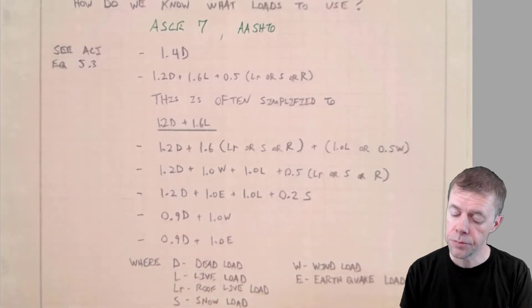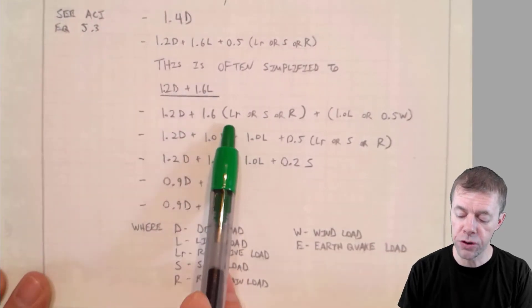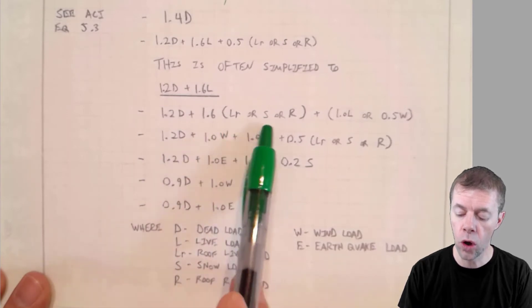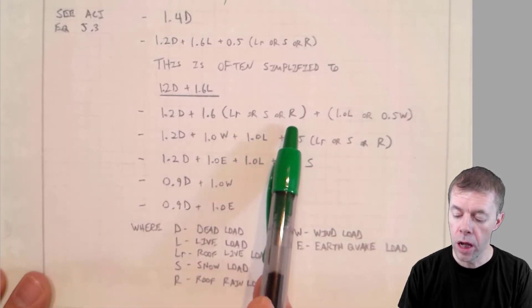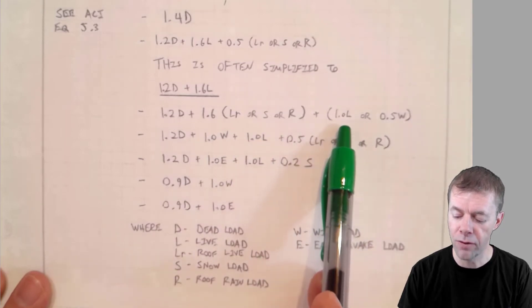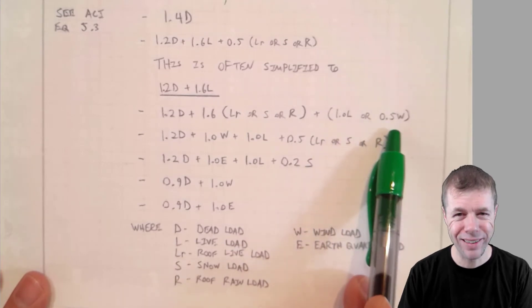Let's keep going though. Let's say you have 1.2 dead, plus this is roof, snow, or rain. That's usually for a roof. A roof live load, a snow load, or a rain load. Plus, you would design for 1.0 times the live load, or half the wind. What? How strange.